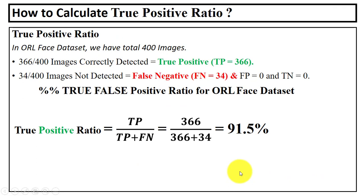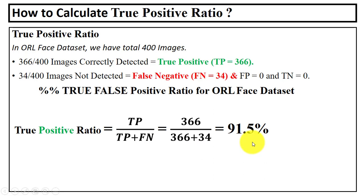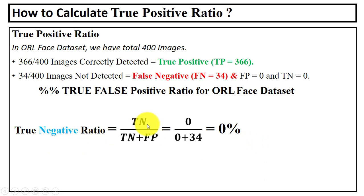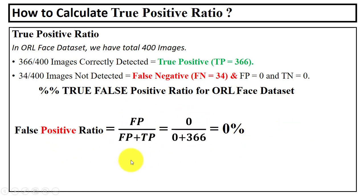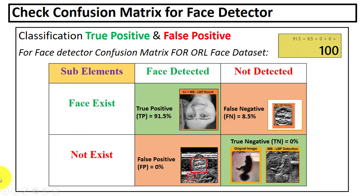Now we will learn how to compute the performance ratios. True positive ratio is computed as TP / (TP + FN) — putting the values we got 91.5 percent. True negative ratio is TN / (TN + FP) — we got 0 percent. False negative ratio is computed by its formula — we got 8.5 percent. False positive ratio is computed using its formula — we got 0 percent.